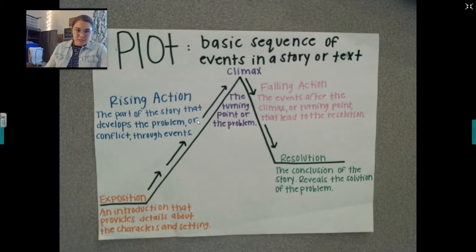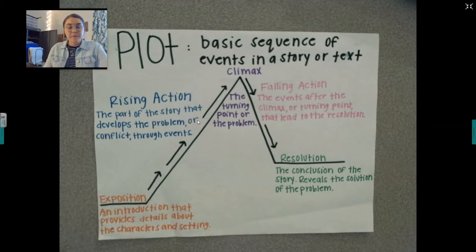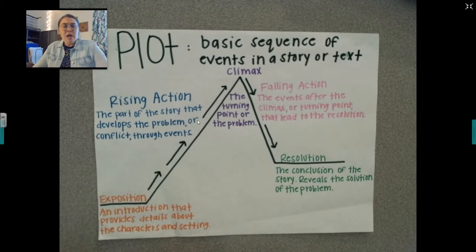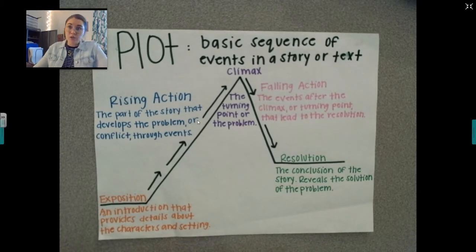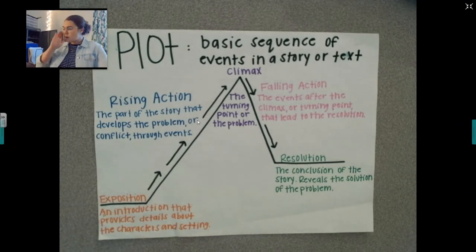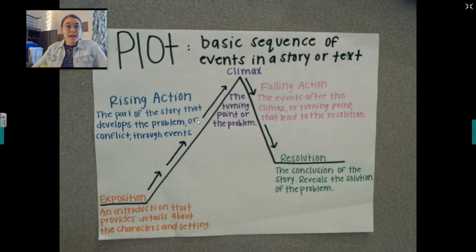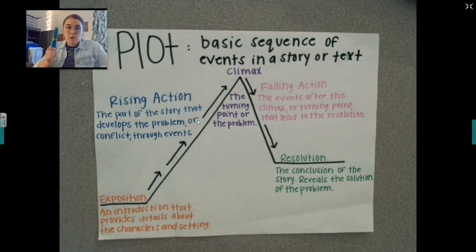The first thing is our exposition. Now that is a big fancy word that means the characters and the setting. That's at the very beginning of the book where they introduce you to what's going on. So in the first couple of chapters, we were introduced to Gregor's mom, Gregor, his two little sisters, Boots, and the other one — Lindsay or something — his aunt, his grandma, his grandma's friend. And we knew that the setting at the very beginning was when they were in their apartment, the laundry room, and then it slowly moved to the underland.